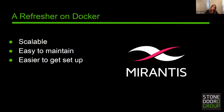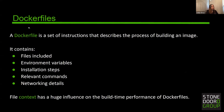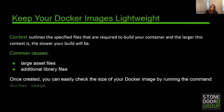We're also going to take a look at one of the features provided by Docker Enterprise. First, let's get into Docker images and how to keep them lightweight. A Dockerfile is a set of instructions that describes the process of building an image — it contains files, environment variables, installation steps, relevant commands, and networking details. File context has a huge influence on the build time performance of Dockerfiles. Context outlines the specified files required to build your container, and the larger the context, the slower your build can be.